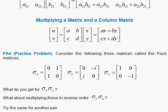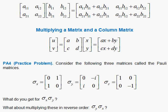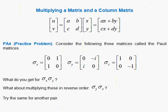Here's a practice problem. Take these famous matrices, the Pauli matrices, which we'll study later, sigma sub X, sigma sub Y, and sigma sub Z, and multiply the first two together. See what you get. And then try multiplying them in the reverse order. In other words, put the Y one first and the X one second and multiply them. And try that for other pairs and see what you get.